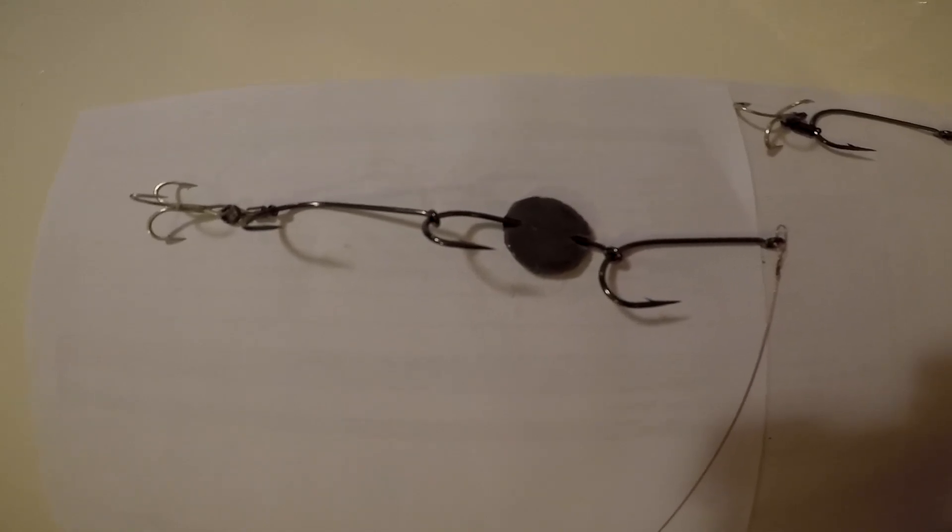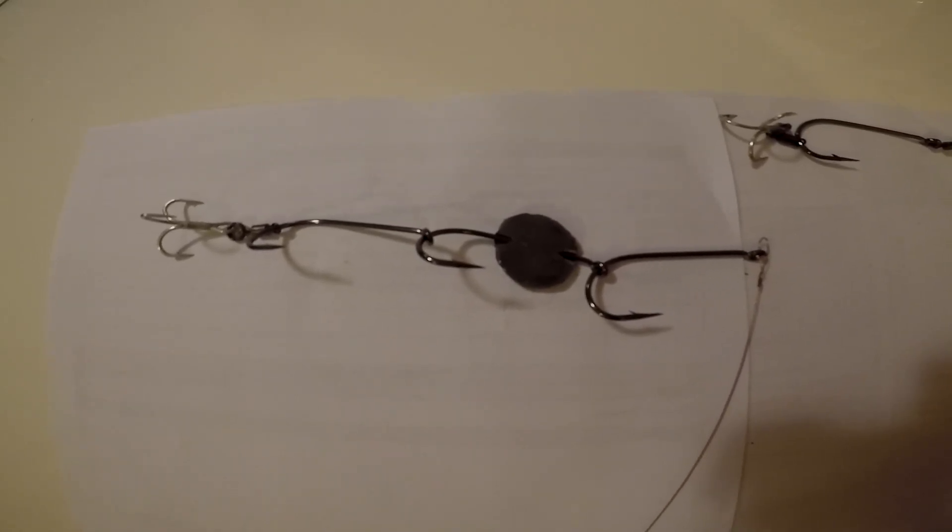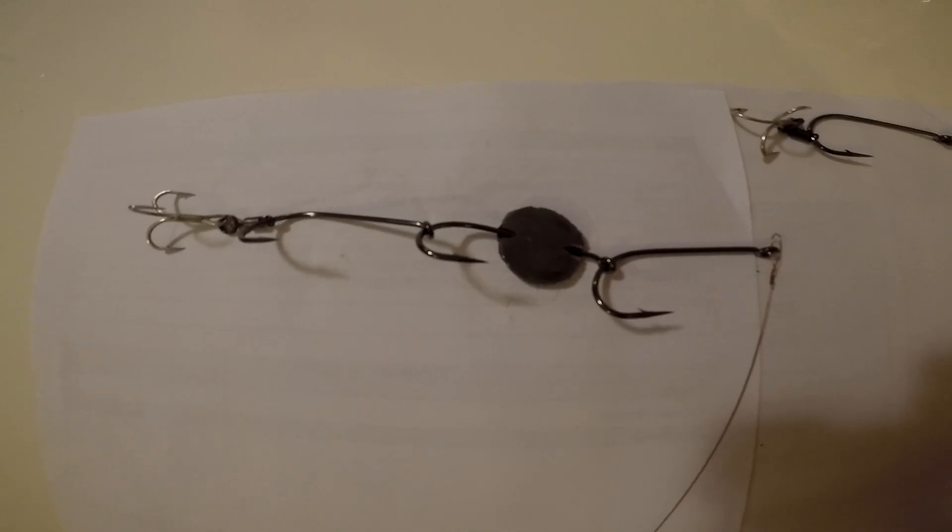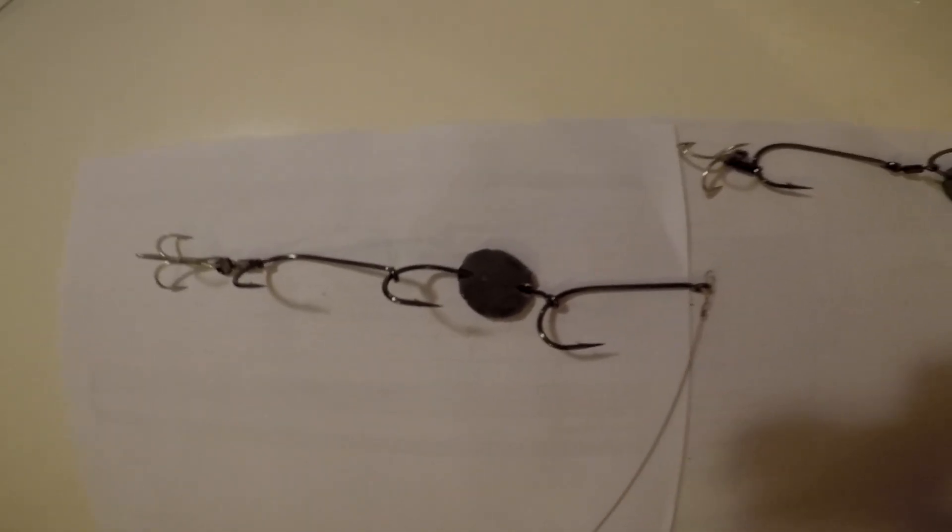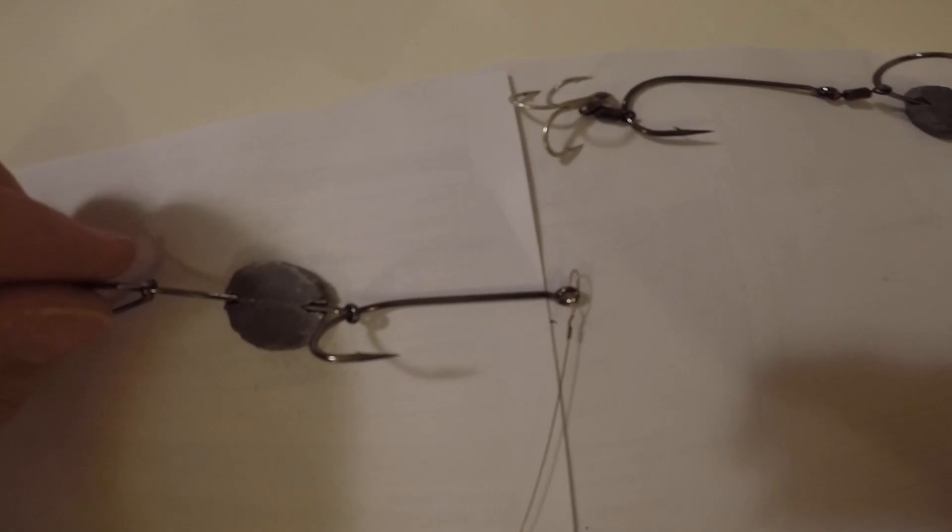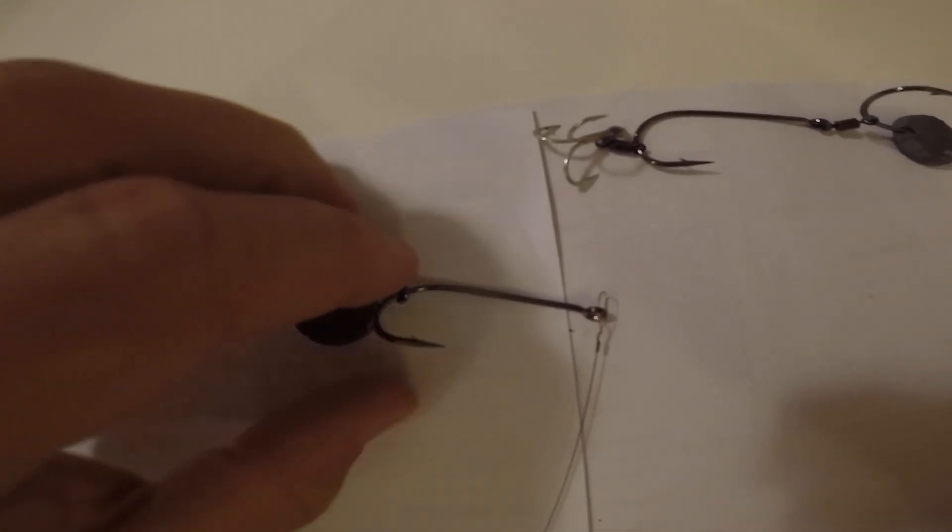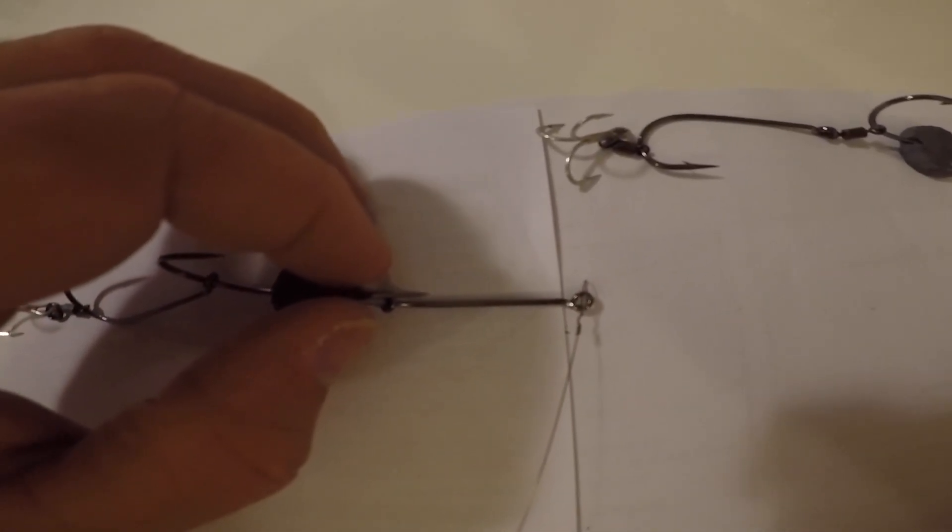So this first rig here has three Gamakatsu gangsters ganged together, as you can see. The first one is straight, whereas the other ones are bent. You see the hooks offset. This one's straight, that pins it under its chin.